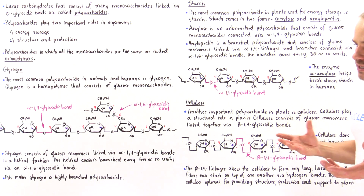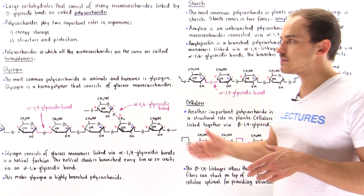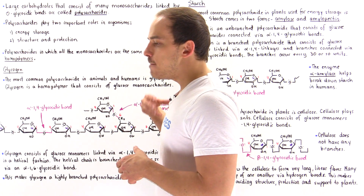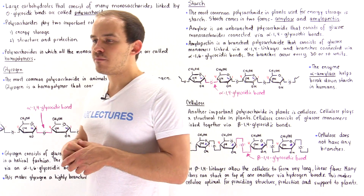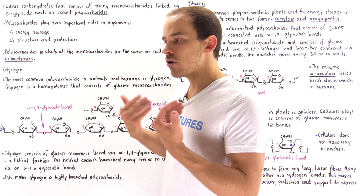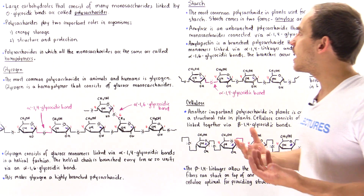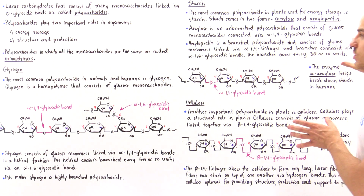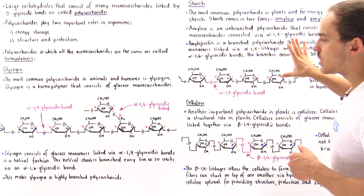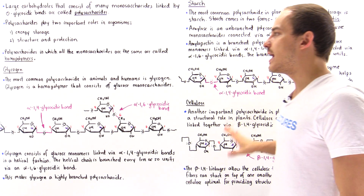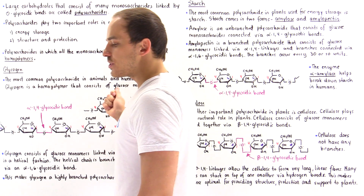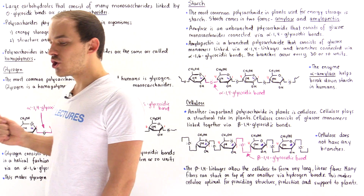We're going to begin by discussing glycogen, which is the major type of polysaccharide that exists in our own cells and other animal cells. And then we're going to move on and discuss starch as well as cellulose. So let's begin with glycogen.